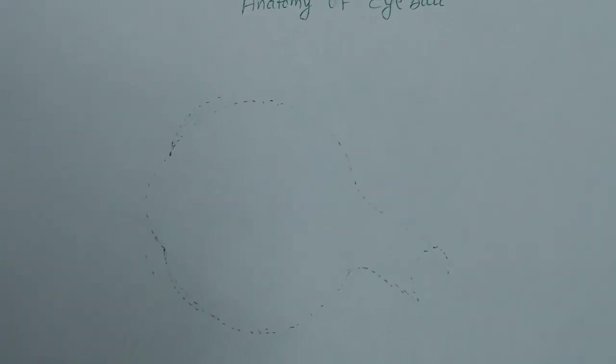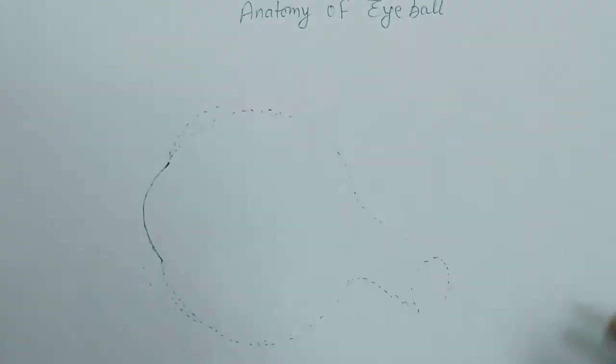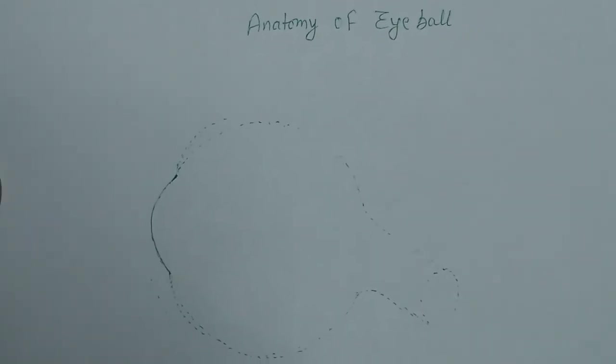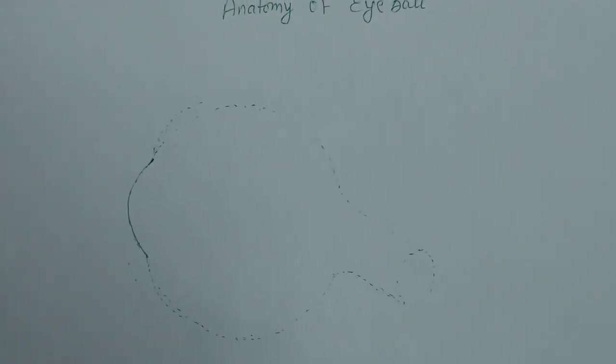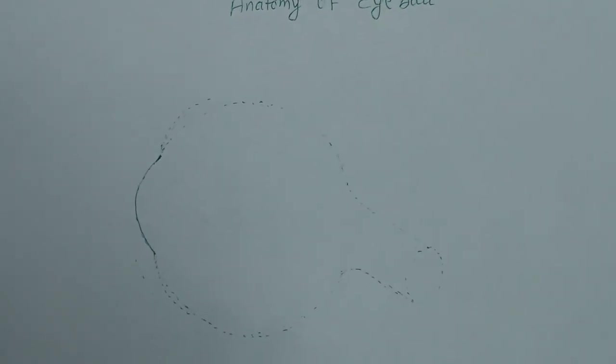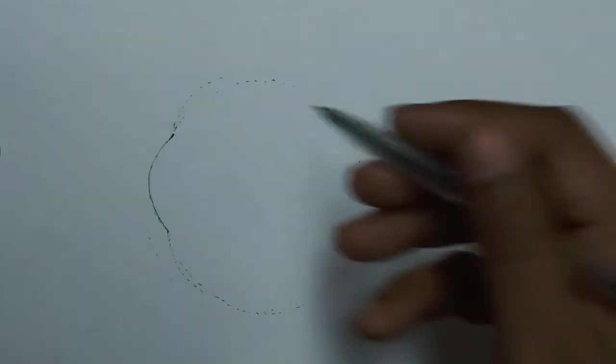So now, this is a cornea. Cornea is a dome-shaped structure. When we see the front of the eye, there is a structure between the white sclera — a black spot-like structure. That is a dome-shaped structure. In reality it is transparent, but if we see from the front, it appears black in color. This is called cornea.